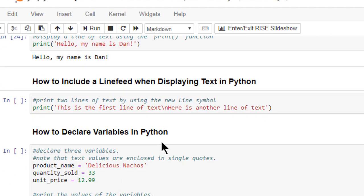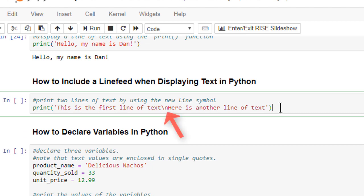This next code cell demonstrates how we can use the forward slash n new line symbol to display multiple lines of text with only one call to the print function. When I click the run button, Python will print both lines of text to the screen.